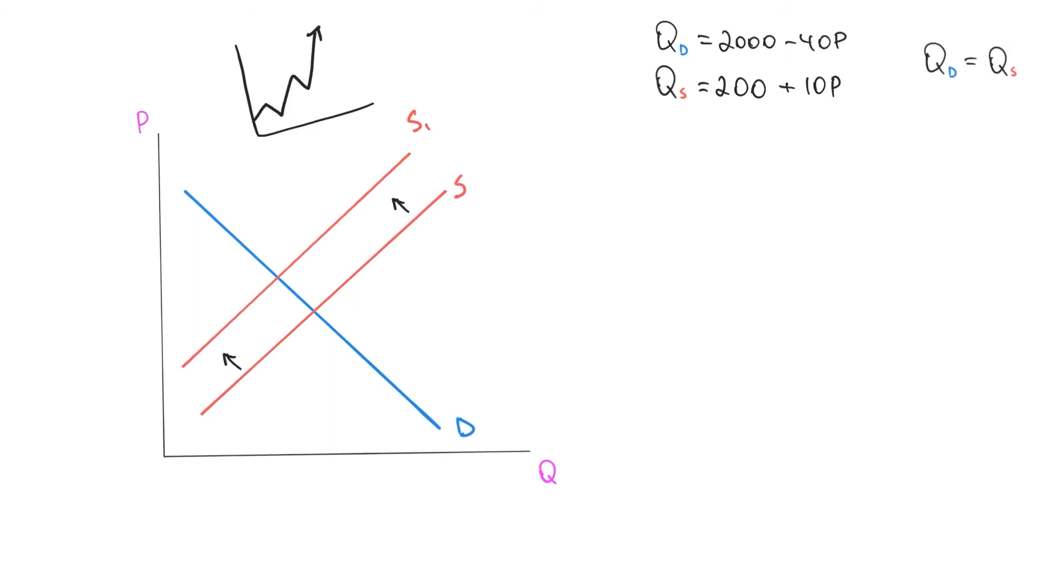We have 2000 minus 40p equals 200 plus 10p. If we rearrange it, we get 1800 equals 50p. Or the price is equal to $36. And to plug it back in, we have 200 plus 10 times 36 equals 560.